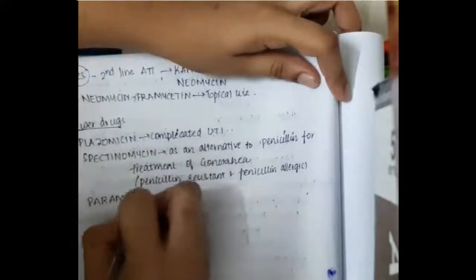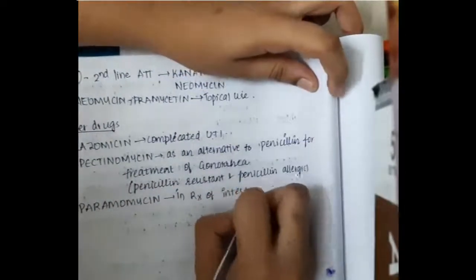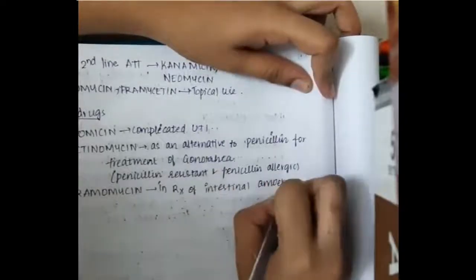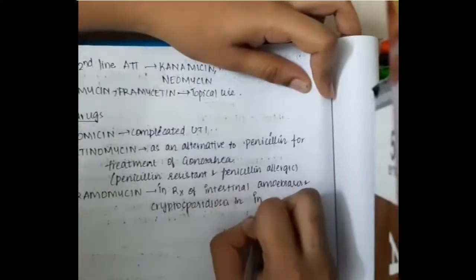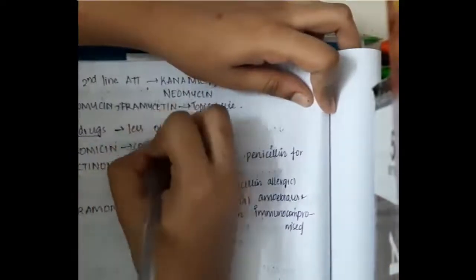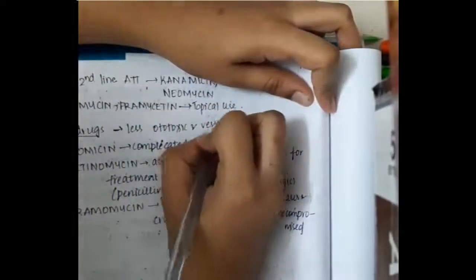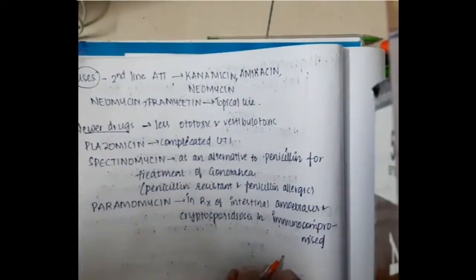Paromomycin is used in the treatment of intestinal amebiasis and cryptosporidiosis in immunocompromised patients. These newer aminoglycosides are less ototoxic and less vestibulotoxic. These are the important points about aminoglycosides.